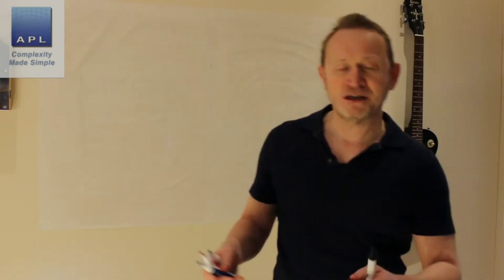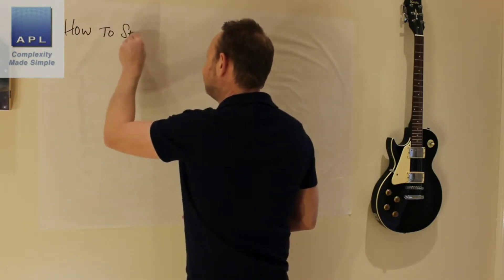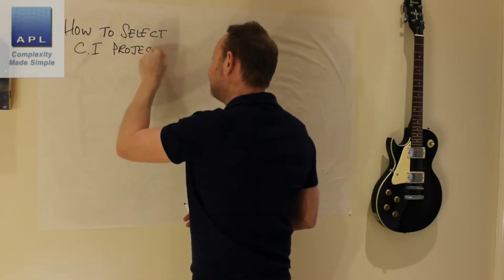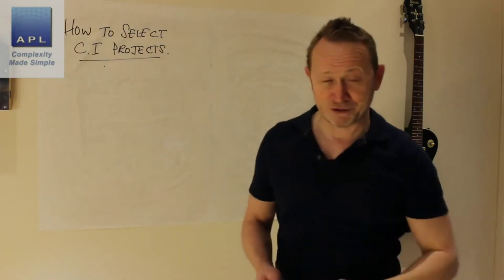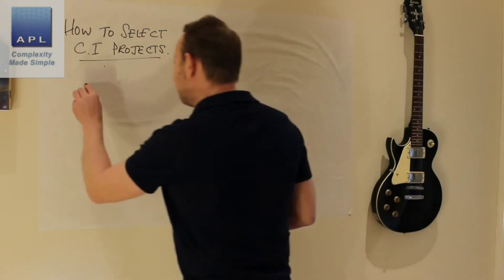The subject of today's newsletter is how to select your continuous improvement projects. This could have been called how to select your Six Sigma projects, but I've said continuous improvement projects because the methods I'm going to describe aren't necessarily about Six Sigma — they could be, but actually all your projects should probably be selected using one or all three of the methods I'm about to describe. One of them is a Six Sigma method, one is a lean method, and one is probably just common sense.